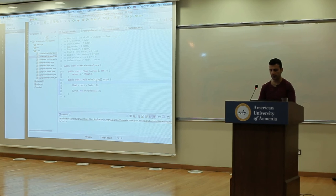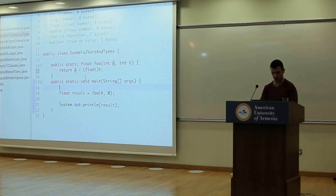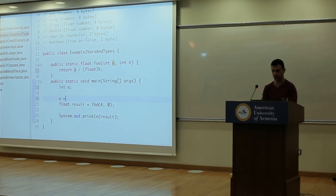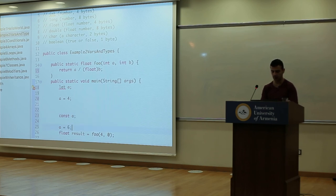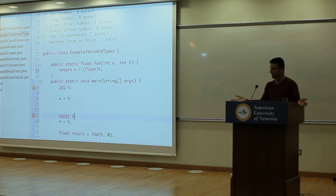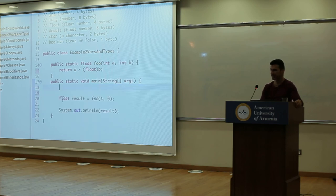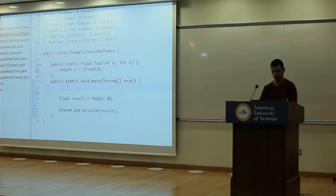In JavaScript, you can write 'let a' and later set 'a = 4'. What you can't do is 'const a' and then reassign it — because a constant cannot be changed by definition. In Java, 'final' is what you use to make something constant. A regular variable declaration like 'float a' is like let — you can change it.